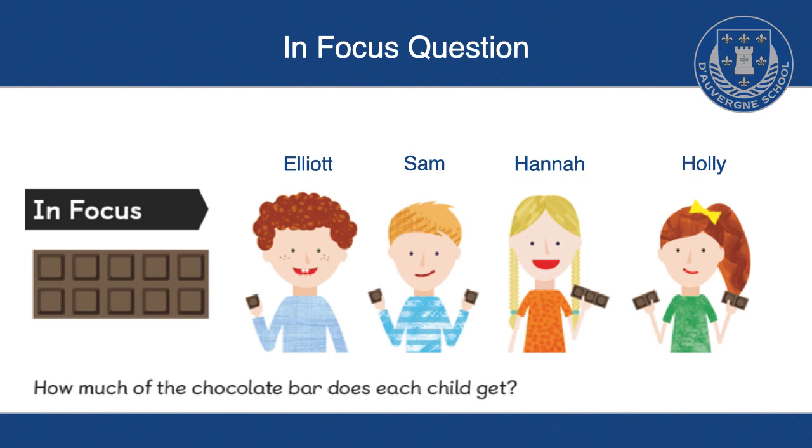We wouldn't just say that Elliot has one piece, Sam has two pieces of chocolate. So have a little think, where would you start with this question? It's fine if you don't know, because we're going to go through it together. But have a little think. If you was to write it as a fraction, how much of the chocolate bar does each child get?